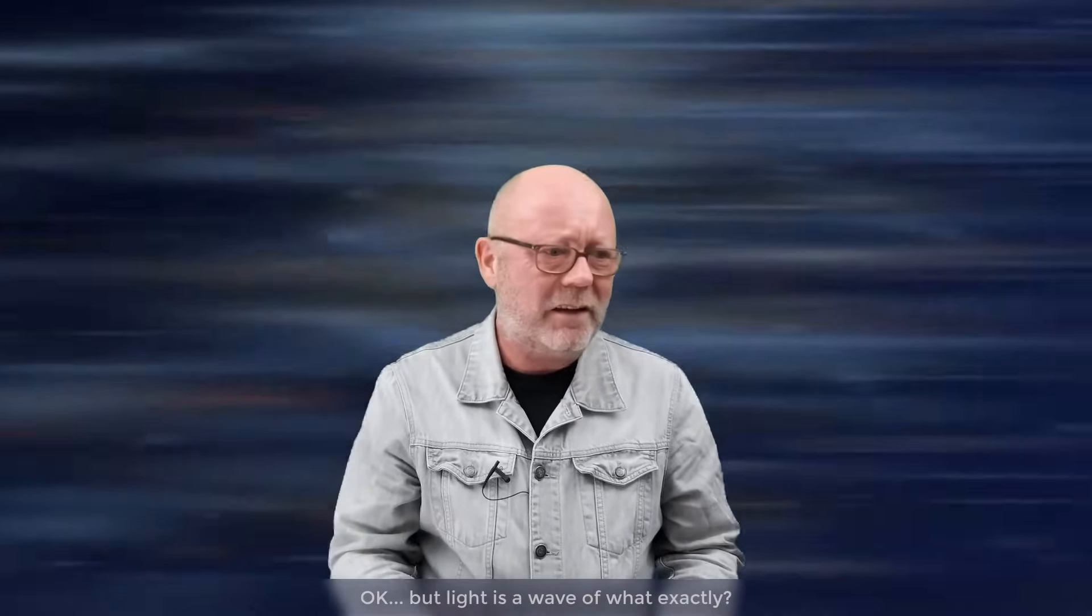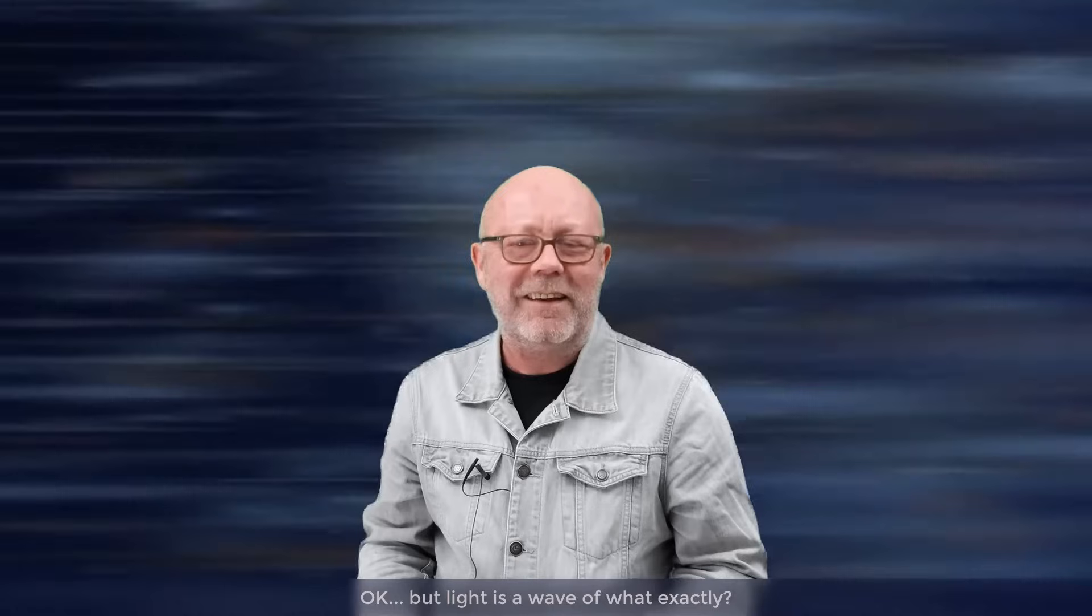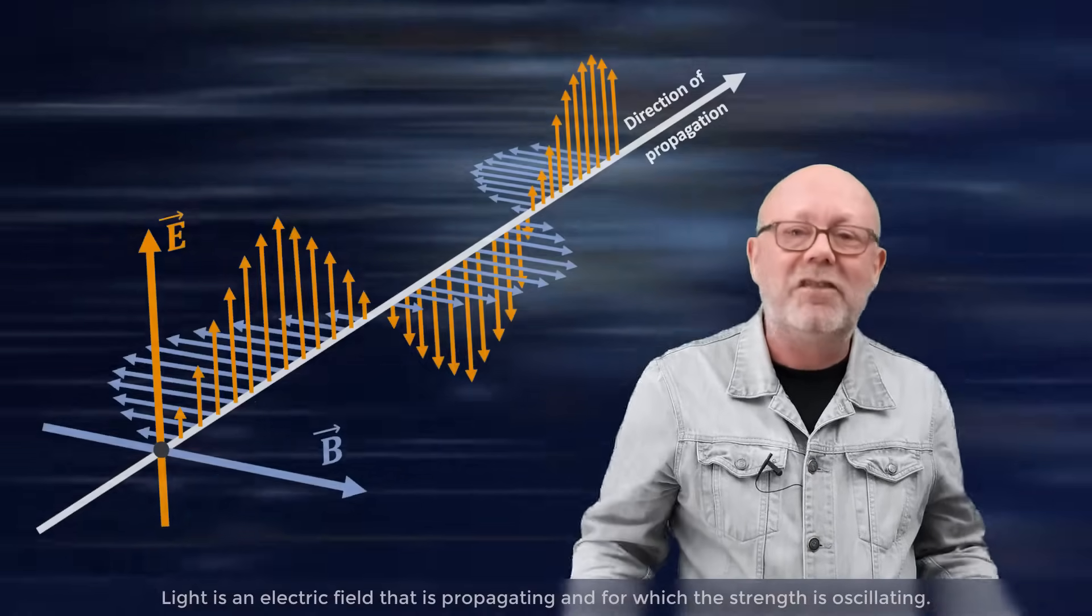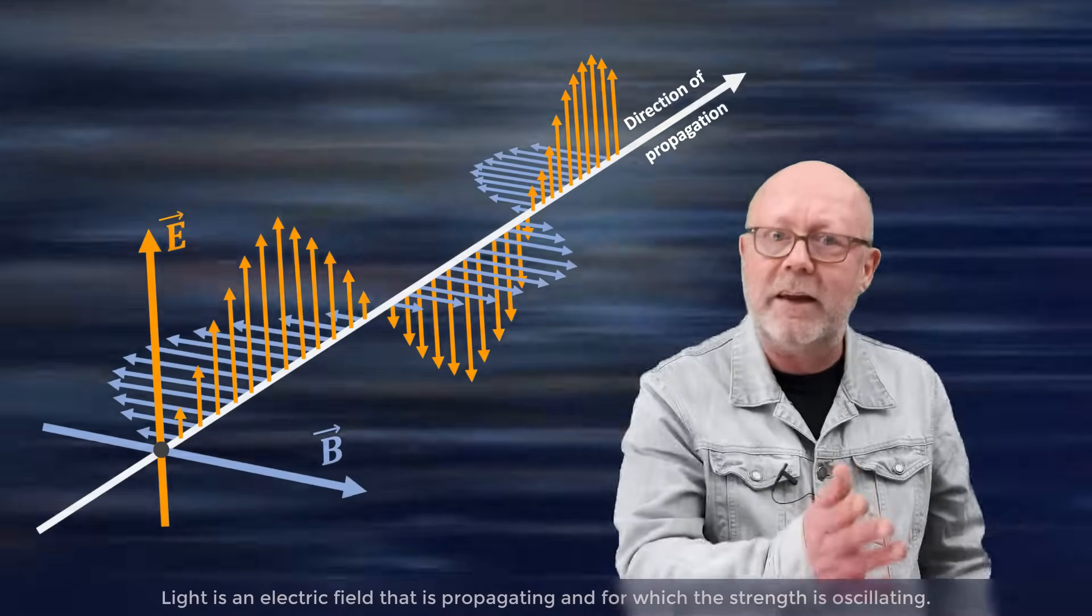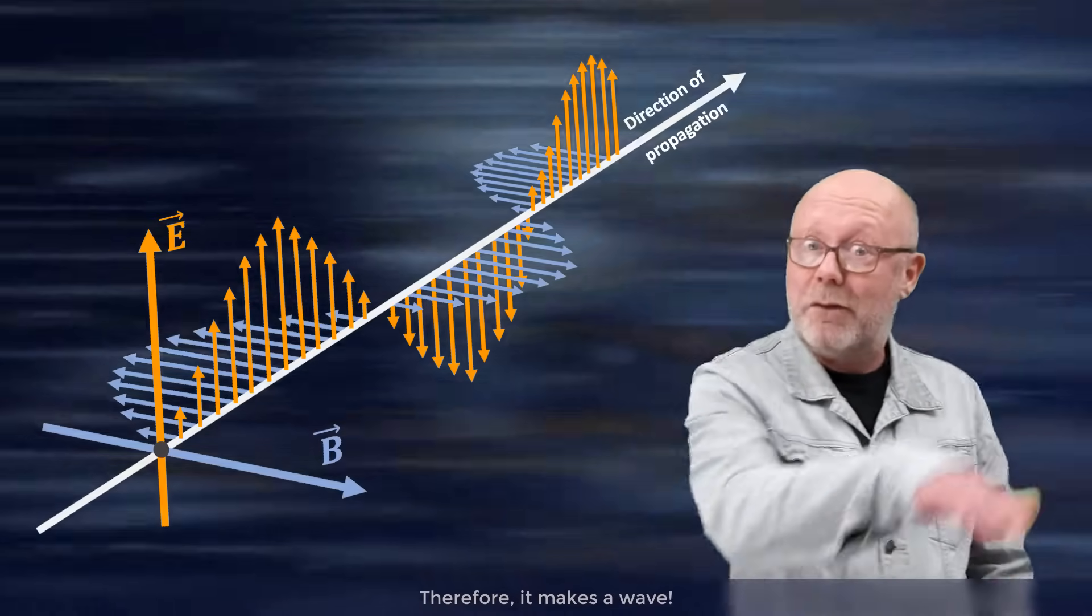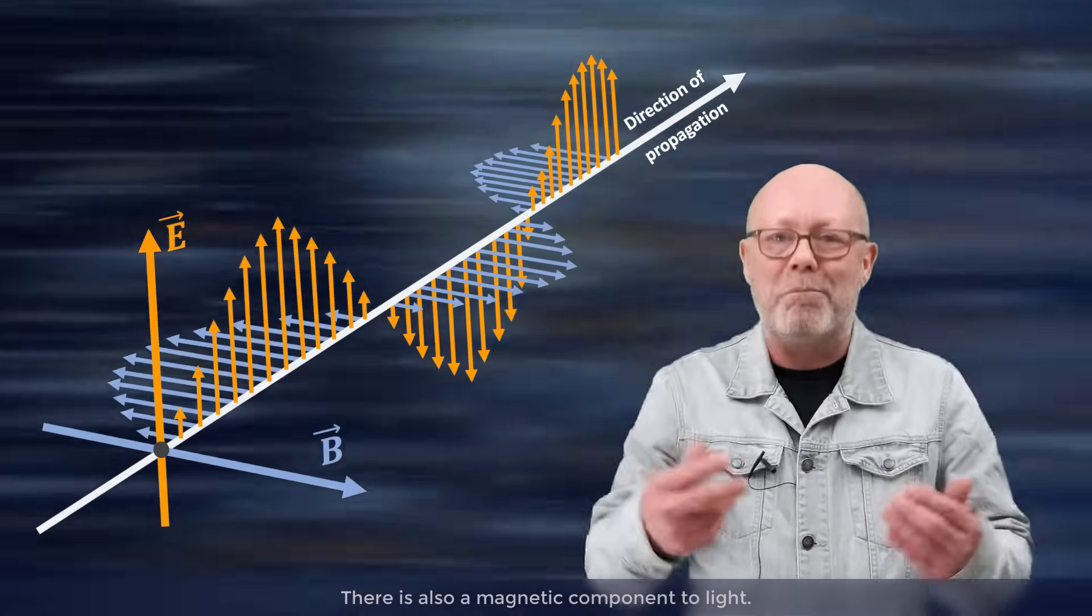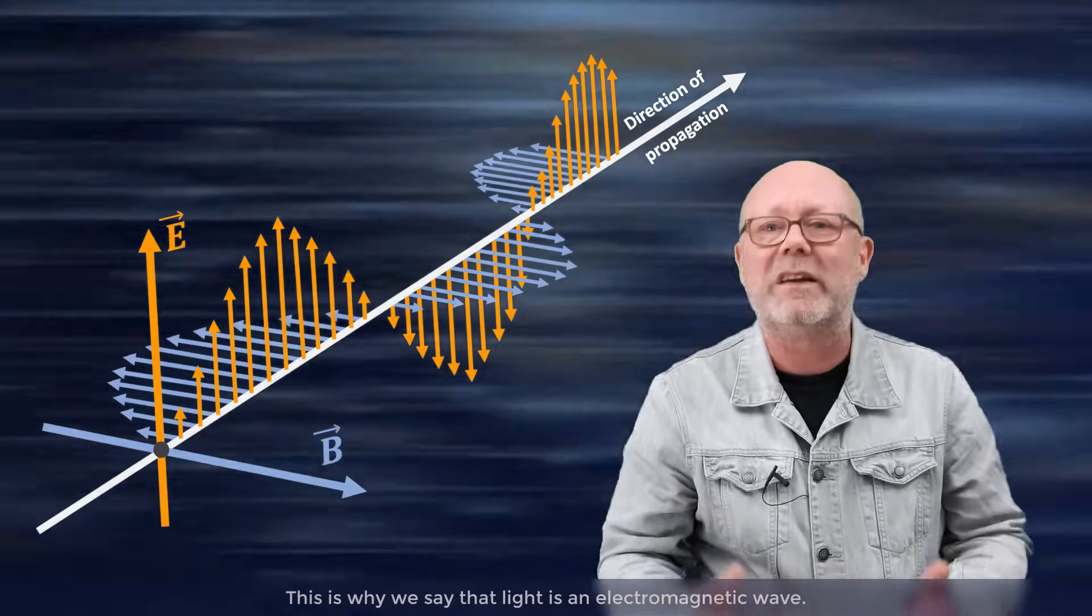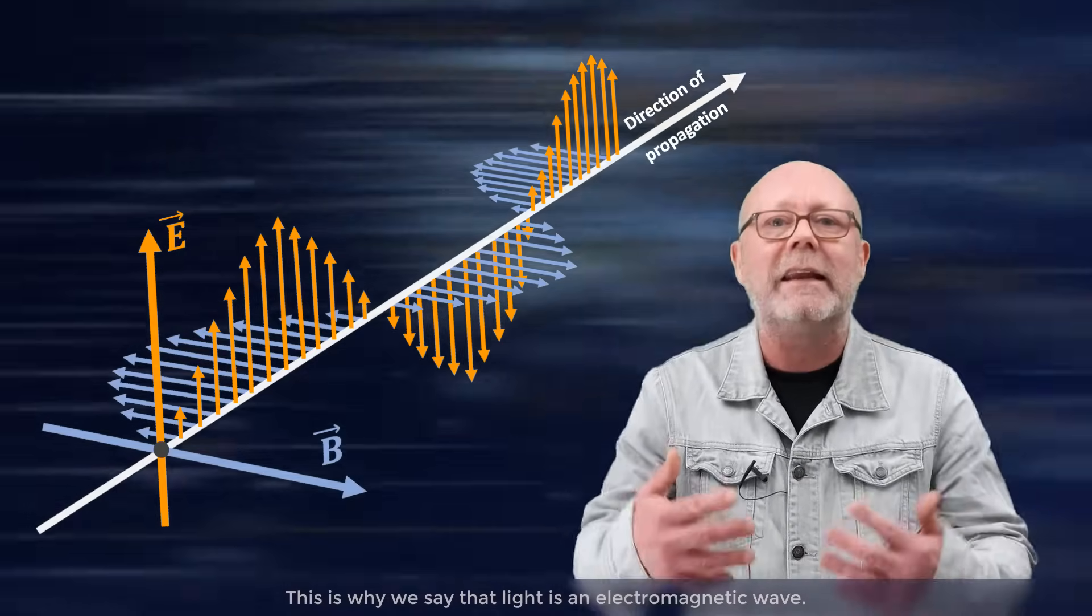But light is a wave of what exactly? Light is just an electric field that is propagating and for which the strength is oscillating, therefore it makes a wave. There is also a magnetic component to light. This is why we say that light is an electromagnetic wave.